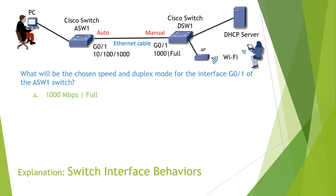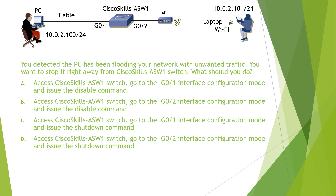Switch interface behaviors. The question reads: you detected that a PC has been flooding your network with unwanted traffic. You want to stop it right away from the Cisco switch ASW1. What should you do? In order to stop the traffic from the PC, you want to shut down interface G01. Therefore, the answer for this question is C.